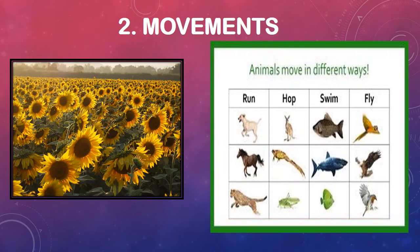Now we come to movement. Living things can move their bodies. Humans can move their hands and legs. Looking at a chart, animals show different types of movement. Some animals run, like horses and tigers. Some animals jump, like deer.